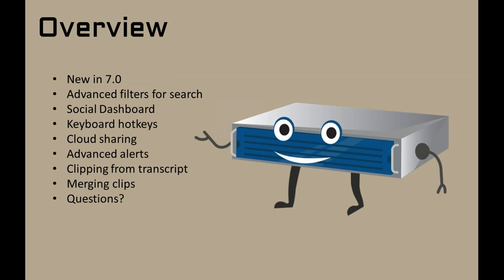Here's an overview of what we're going to look at today. We'll take a look at all the new features added in 7.0 — there's some really great new powerful features. We're going to look at advanced filtering for search, how TV shows and organizations can find those needle-in-a-haystack moments. We'll look at the brand new social media dashboard, advanced keyboard hotkeys, cloud sharing, and advanced alerts including how to set up recordings using the alert system.